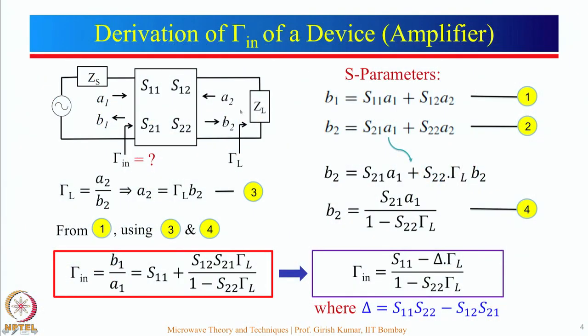For a given device, S-parameters are specified for given biasing conditions by the manufacturer. Now we are going to look at the expression for how to find out gamma_input of a device. This concept is common to any general device, but since this topic is microwave amplifier, I have written 'amplifier' in brackets. Let us see what we want to do and why. The first thing is we want to find out gamma_input.